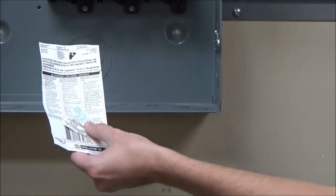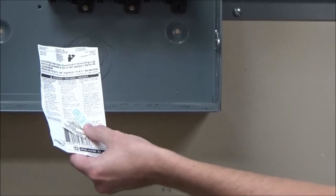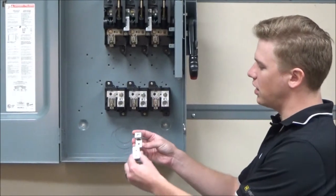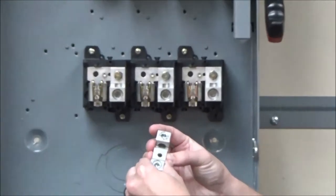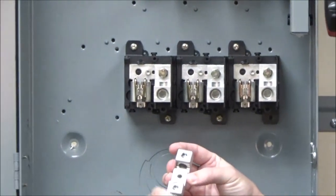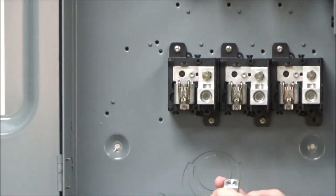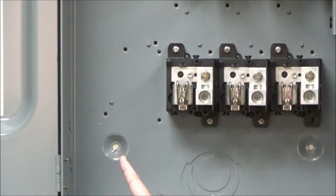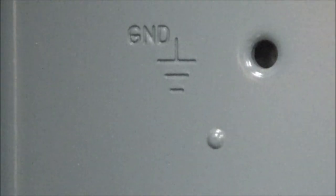You will stack the two lugs like so and then install them using the mounting screw into the ground spot in the switch, which will be identified by the ground stamp. The positioning is also shown on the wiring diagram.